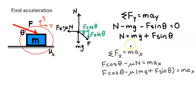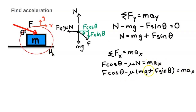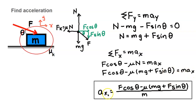This result is going to be important — we'll use it in the next step. Next, we analyze the horizontal motion: net force x equals m·a_x. In the horizontal direction, we have F cosine theta in the positive direction minus mu·n in the negative direction, equals m·a_x. We substitute the normal force from above, getting F cosine theta minus mu times (mg plus F sine theta) equals m·a_x. Dividing both sides by m, the acceleration equals [F cosine theta minus mu(mg plus F sine theta)] divided by m.